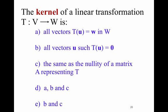Clicker question: the kernel of a linear transformation T mapping V to W is — A) all vectors where T(u) equals w, B) all vectors u such that T(u) equals zero, C) the same as the nullity of a matrix A representing T, or D) both B and C. If you think about that and look at the previous slides, you can find that answer for yourselves.